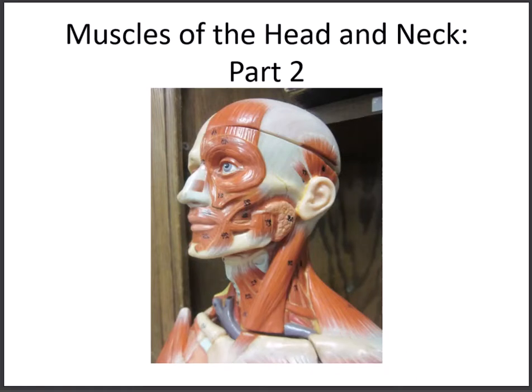In part two, we'll continue our discussion of the muscles of the head, face, and neck. In this video, we're going to start off by looking at the actual muscles that move the eye. Then we'll take a look at the muscles of the anterior neck, divided into two groups: the suprahyoids, muscles above the hyoid, and the infrahyoids, muscles below. We'll then look at the sternocleidomastoid, the scalene group, and finish off by examining the posterior neck muscles.